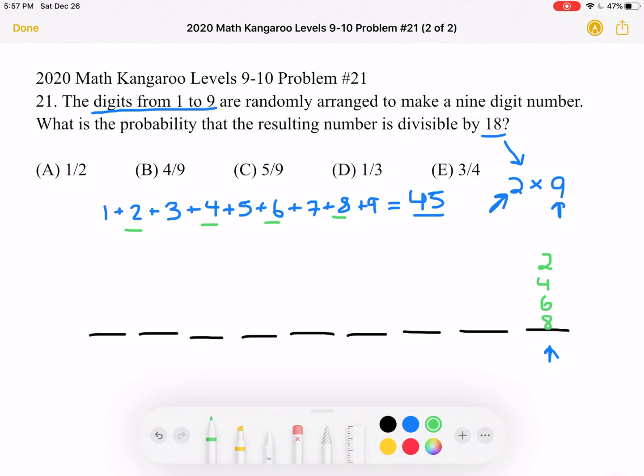So the probability that the resulting number is divisible by 18 is four over nine. This is answer choice B. Thank you so much for watching and please subscribe if you would like to see more videos.